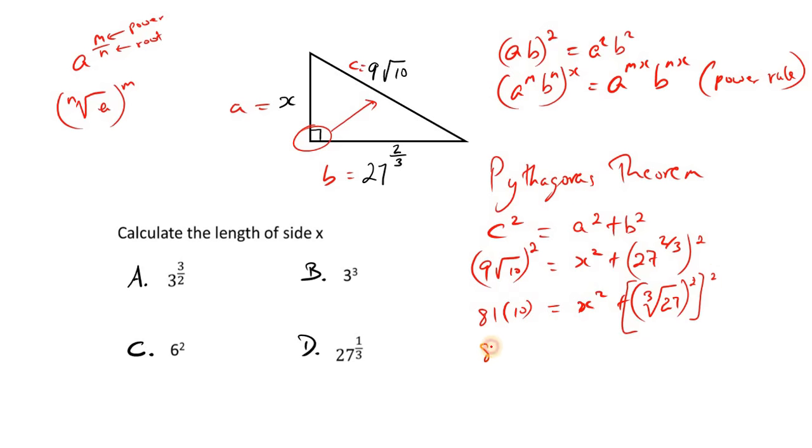Okay. So 81 times 10, that's 810. And x to the power of 2, leave that as it is. Plus, provide a plus sign, that's here.